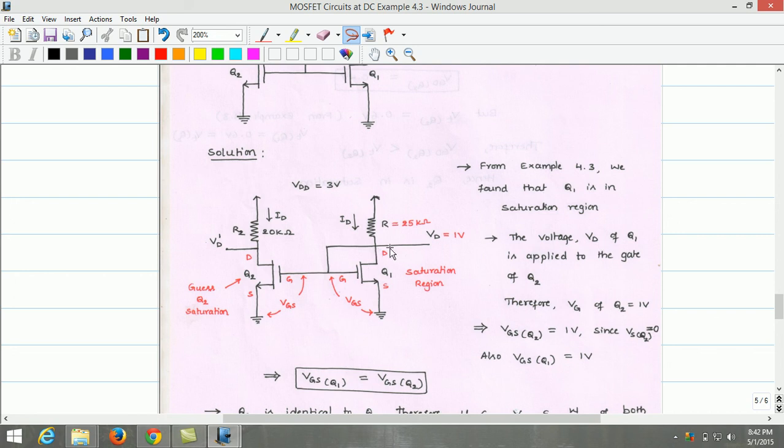The voltage Vd of Q1, which is 1 volt, is also applied to the gate of the Q2 transistor. Therefore, Vg of Q2 equals 1 volt. This implies Vgs of Q2 is also 1 volt, since the source voltage of Q2 is at 0 volt.